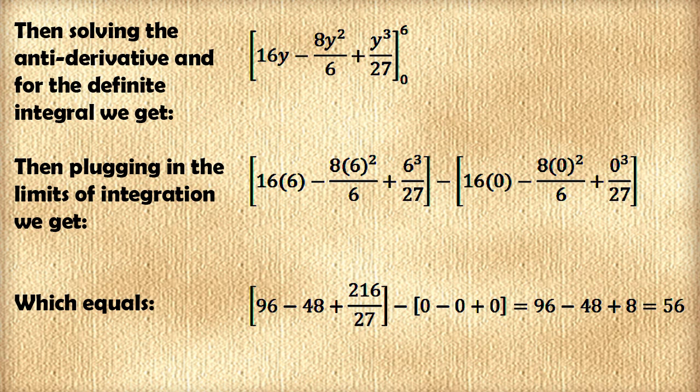Which simplifies to 16 times 6 is 96, 8 times 6 squared over 6 is 8 times 6, which is 48, 6 cubed is 216, that's divided by 27. All the terms with 0 basically go to 0, and then we have 96 minus 48, plus 8, which is 56, which is the same value that the ancient Egyptians had on the Waset mathematical papyrus in problem 14.